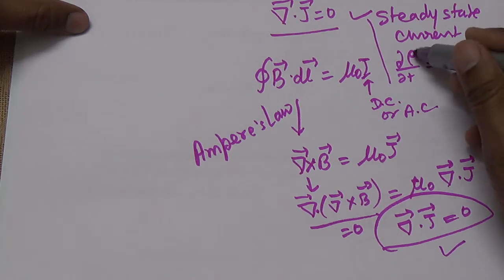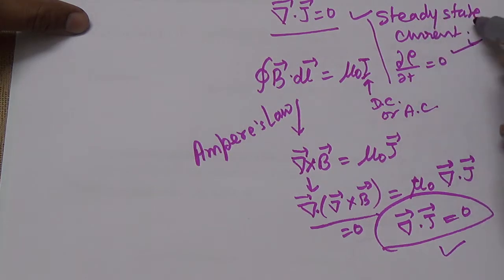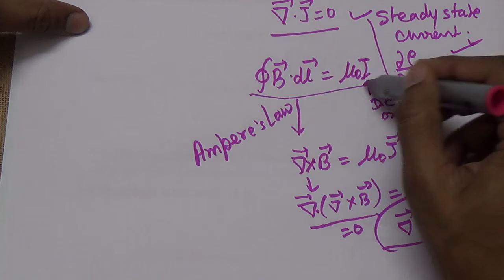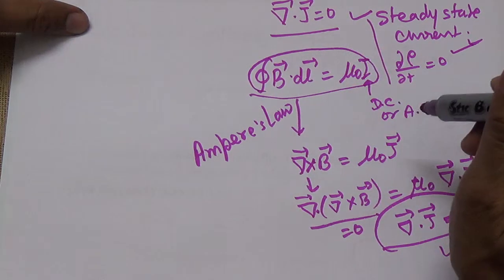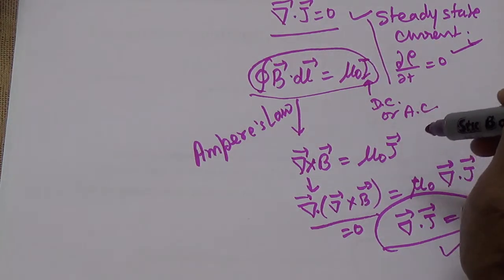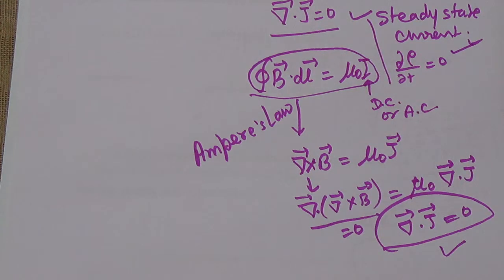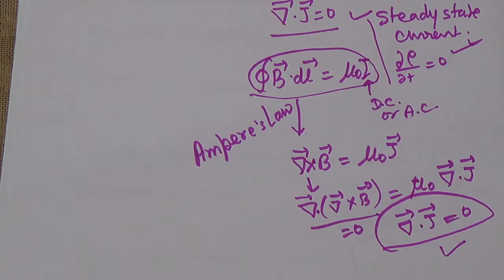On the basis of this result — when we take the divergence of Ampere's law — we find it is consistent only when ∇·J = 0, that is, for steady state direct current. Using the continuity equation, Ampere's law is valid only for direct current. Therefore, Maxwell improved Ampere's law by introducing the displacement current, which is the next topic to be discussed.